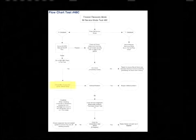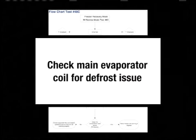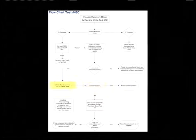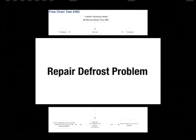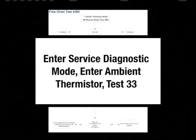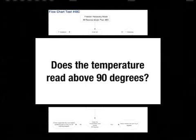If the doors are sealed completely, then check the main evaporator coil for a defrost issue. If there is a defrost issue, repair the problem. If there is no defrost issue, enter the Service Diagnostic Mode for the refrigerator and enter Test 33, the ambient thermistor test. Does the temperature read above 90 degrees?